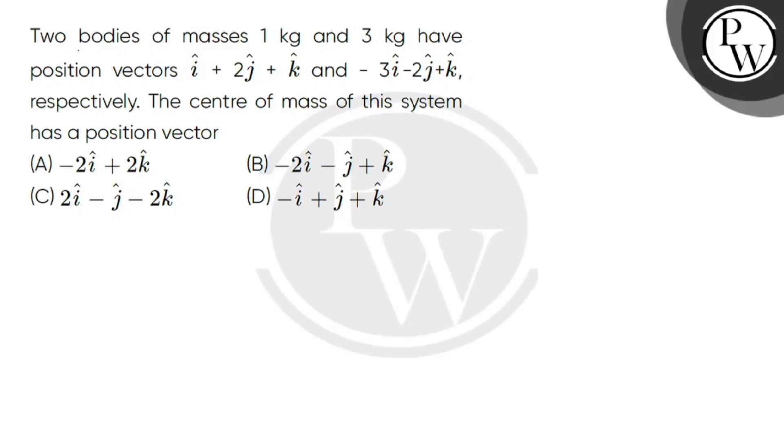Hello, let's read the question. Two bodies of masses 1 kg and 3 kg have position vectors i plus 2j plus k and minus 3i minus 2j plus k respectively. The center of mass of this system has a position vector.